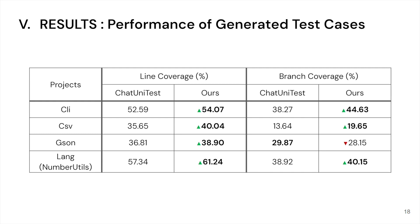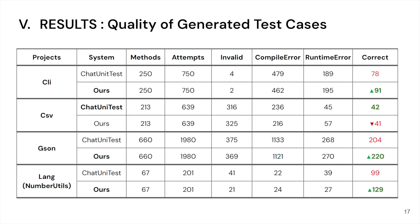One interesting thing from this table is that we achieved the most substantial improvement in terms of coverage in the CSV project as you can see here, which is kind of in conflict with the first result where CSV is the only project where we experienced a decrease in terms of number of correct test cases.